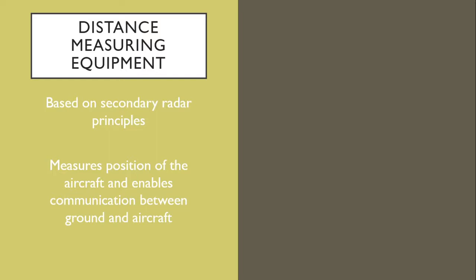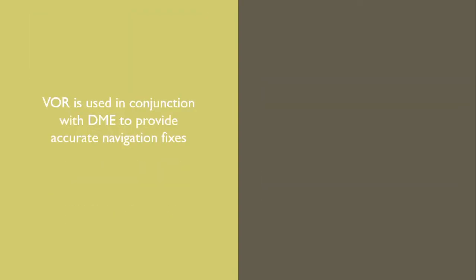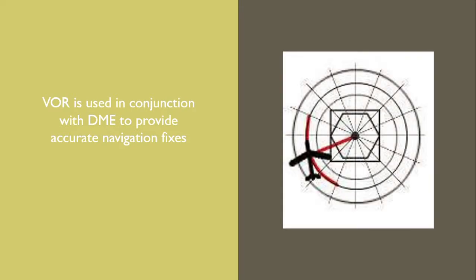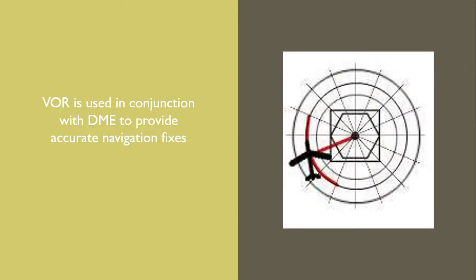Distance Measuring Equipment uses secondary radar principles. It measures the distance of the aircraft from the radar and also enables communication between the ground and the aircraft. Very High Frequency Omnidirectional Range is used in conjunction with Distance Measuring Equipment to provide accurate navigation fixes.